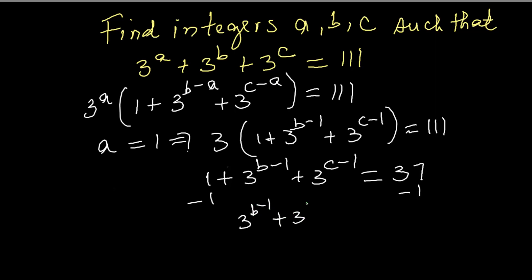3 raised to the power B minus 1 plus 3 raised to the power C minus 1 equals 36. We need 2 powers of 3 that add to 36.